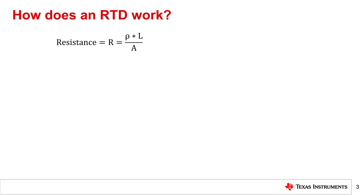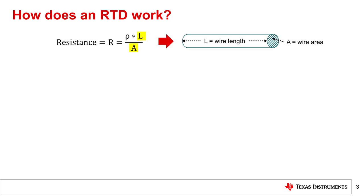As shown at the top left of this slide, the resistance of a material is equal to its resistivity multiplied by the ratio of its length, L, to its cross-sectional area, A. As an example, a wire is shown in the top right that has a length, L, and an area, A, both of which are well-defined and easy to apply to the resistance equation. However, the third term, resistivity, is the key to understanding how RTDs behave.